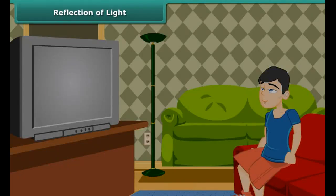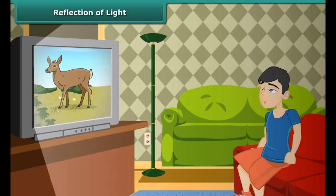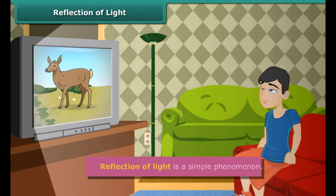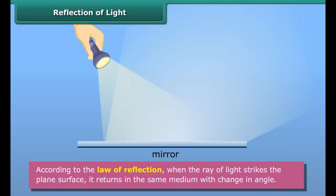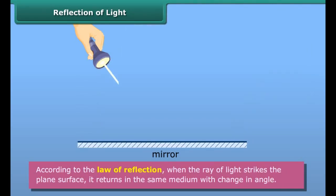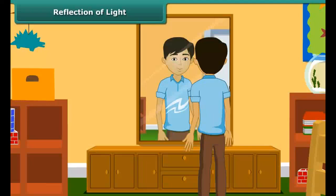Reflection of light. Can you tell how do we see objects? We see objects when light reflected from them reaches our eyes. Reflection of light is a simple phenomenon. According to the law of reflection, when the ray of light strikes a plain surface, it turns in the same medium with a change in angle.